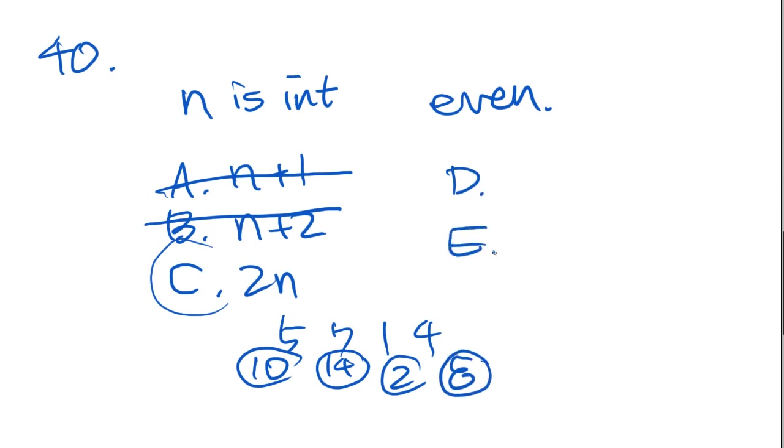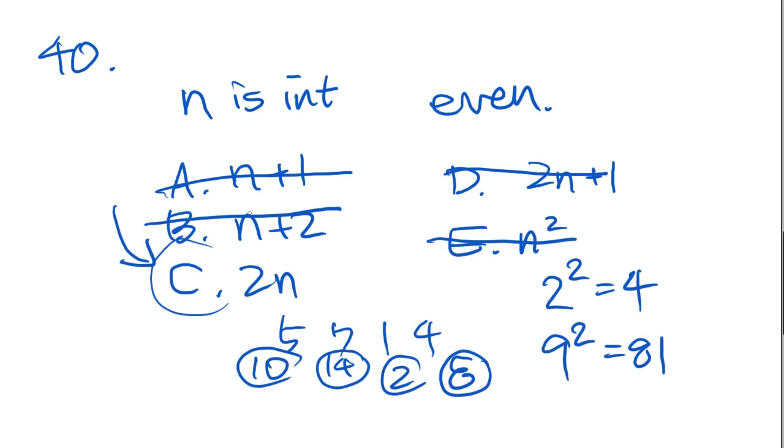Let's look at answer choices D and E and figure out why they're not true, or why they're not the answer. Now, D says 2n plus 1. This would always be odd, because 2 times anything would be even, but then if you add 1 to it, it's always going to be odd, so that's why it's not D. And E says n squared. That's not necessarily true, because if n was even, such as 2, 2 squared is going to be 4, and that's even. But if it were an odd number, like 9, 9 squared is 81, and that's odd. So that's why it's not E. So the answer is C.